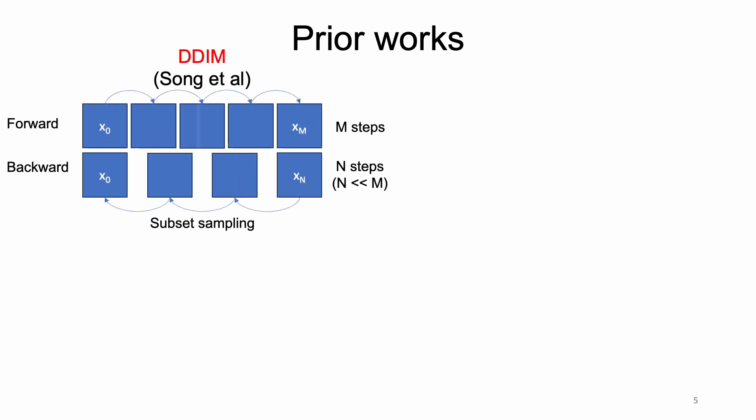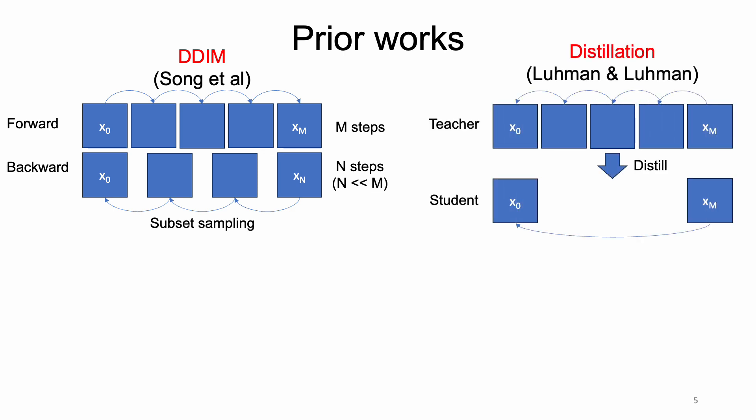As such, some works have been proposed to speed up the sampling process. DDIM, the first attempt, reduces inference steps via breaking the Markov chain process. However, during training, the model still relied on the 1,000-step Markov chain. Alternatively, distillation compresses a pre-trained model with many time steps into a model with fewer time steps. However, it requires a pre-trained teacher, which is expensive to acquire.